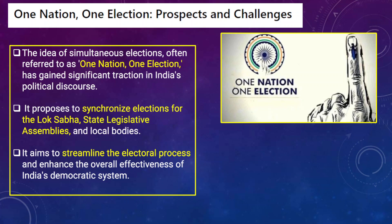Simultaneous elections are very often referred to as One Nation One Election. Since it has a lot of benefits, the current government has been planning to conduct elections across the country at a single time. This concept has gained significant traction in India's political discourse. India's opposition parties have been opposing it, as they believe simultaneous elections will benefit the national party at the center.